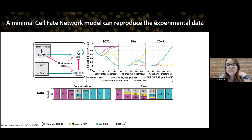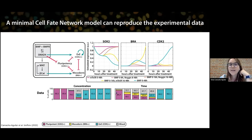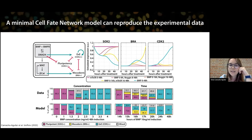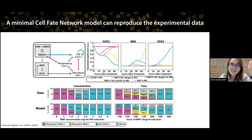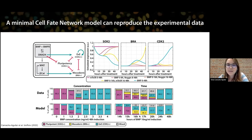Next, we used this deterministic model to fit a noise parameter in order to reproduce the heterogeneity observed in the data — the proportions of each cell fate. We were pleased to see that by fitting the noise parameter alone, we were able to reproduce that under low concentrations we couldn't see much mesoderm, while with pulsing we obtained high mesoderm induction.